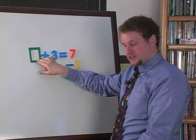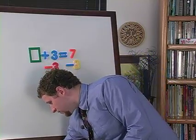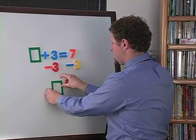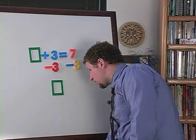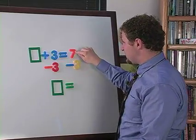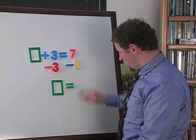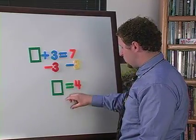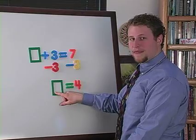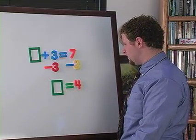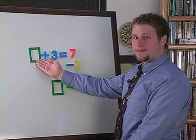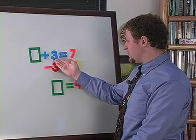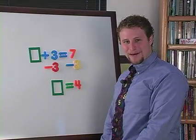Which means that on this side of the equation, I really just have the box left. And that is equal to 7 minus 3, which is 4. So that means I know that the box is equal to 4. Back in the original problem, that would mean that 4 plus 3 is equal to 7. And that works.